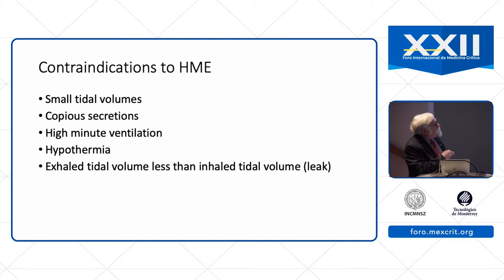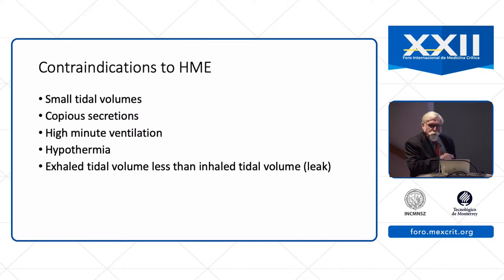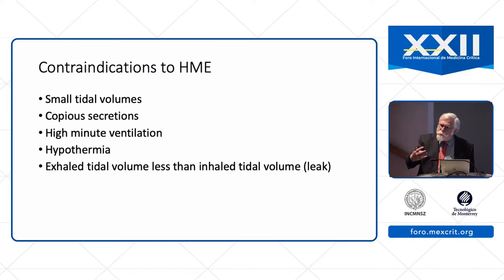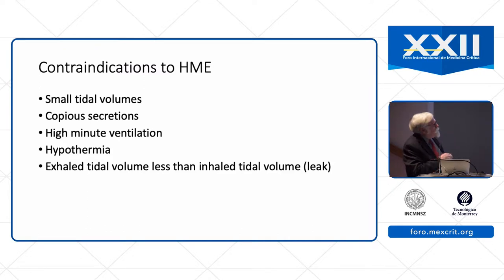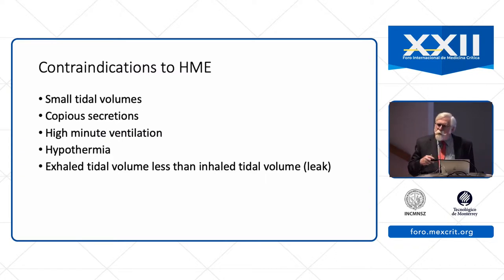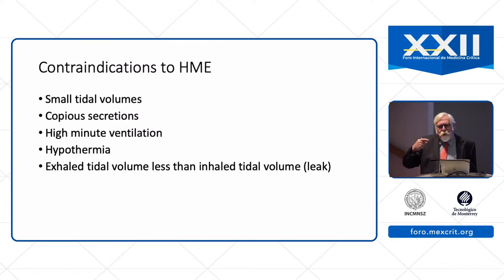With high minute ventilations, the heat and moisture exchanger is less efficient. It is less efficient with hypothermia, as it relies on trapping exhaled heat from the patient and delivering it back on the subsequent inhalation — which will not be effective if the patient is cold. These devices are also not effective if the exhaled tidal volume is less than the inhaled tidal volume, such as when there's a leak. For example, if the patient has a bronchopleural fistula with a chest tube and a large air leak, there will be less exhaled breath through the device, reducing its efficiency.